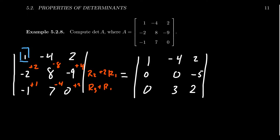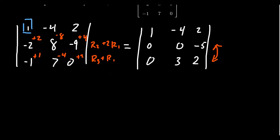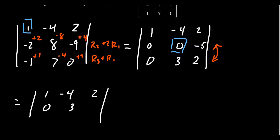To continue row reducing, the next operation is to interchange these two rows, because the pivot position is now the 2,2 position. So we switch the rows and get row 1: 1, −4, 2; row 2: 0, 3, 2; row 3: 0, 0, −5. There is a cost to doing the interchange — while replacement is free, interchange requires multiplying everything by negative one. So remember to put a negative sign in front of the determinant.